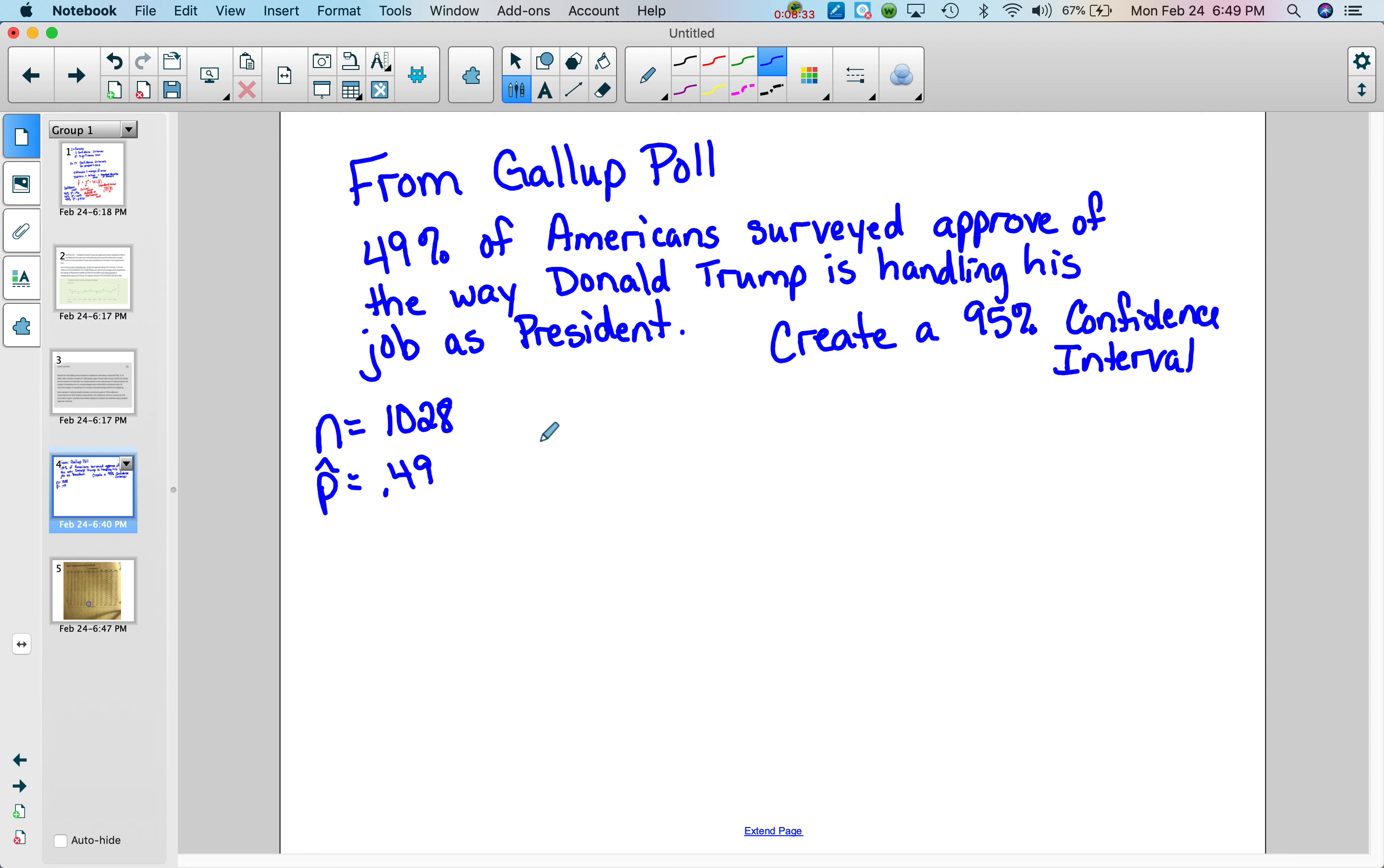So our formula for the confidence interval is p hat, which is our statistic, plus or minus our z star value times the standard error of p hat. So our p hat value is 0.49 plus or minus z star, which was 1.96, times the standard error, which is p hat times 1 minus p hat over N. So we get 0.49 times 0.51 over 1,028.